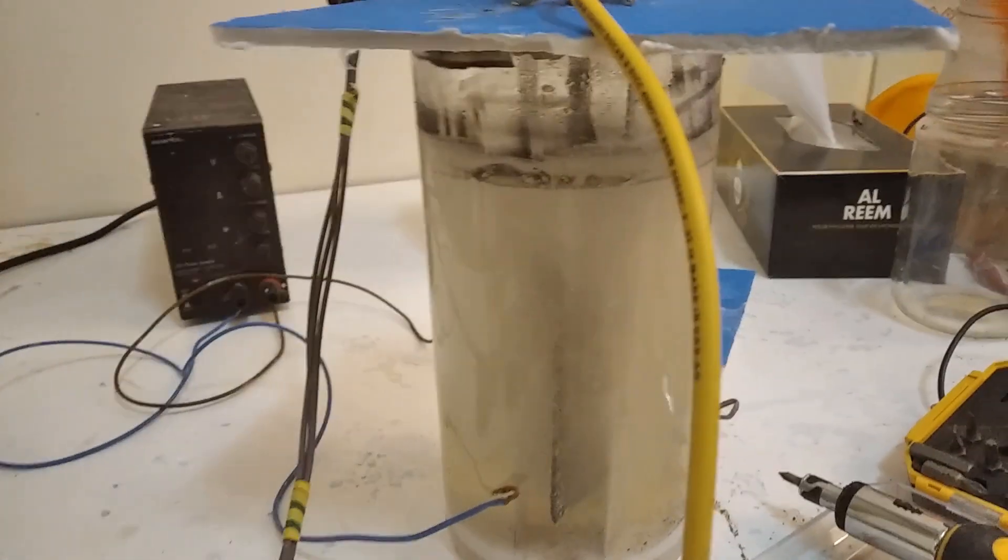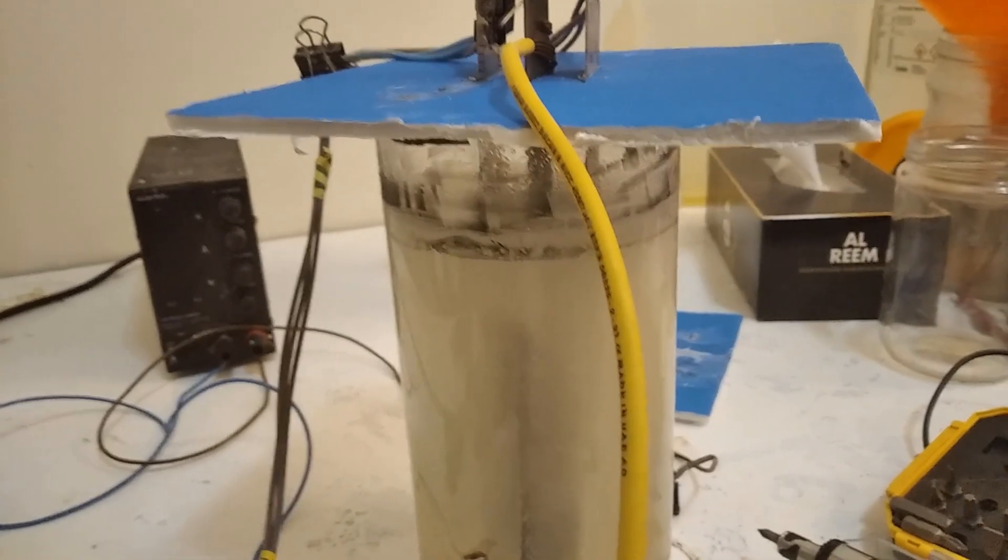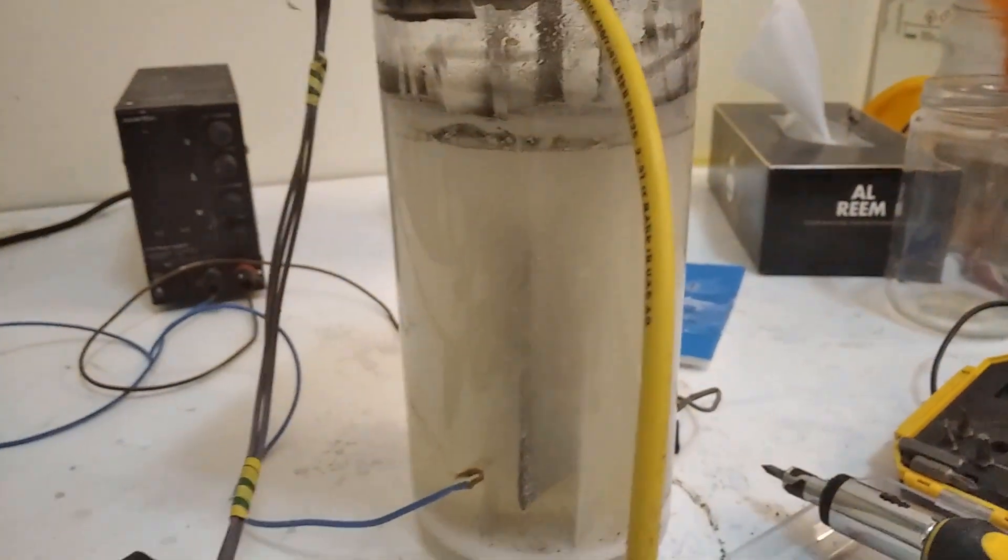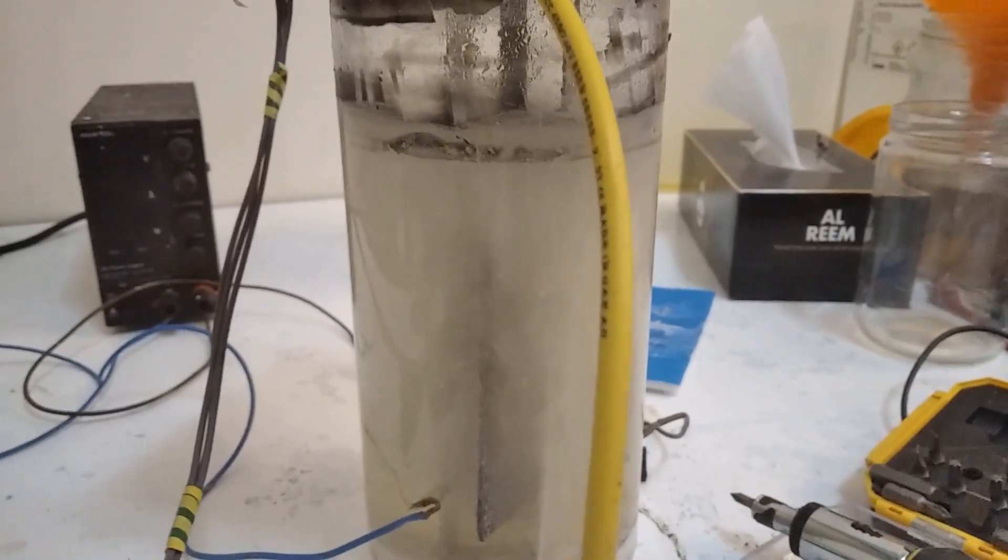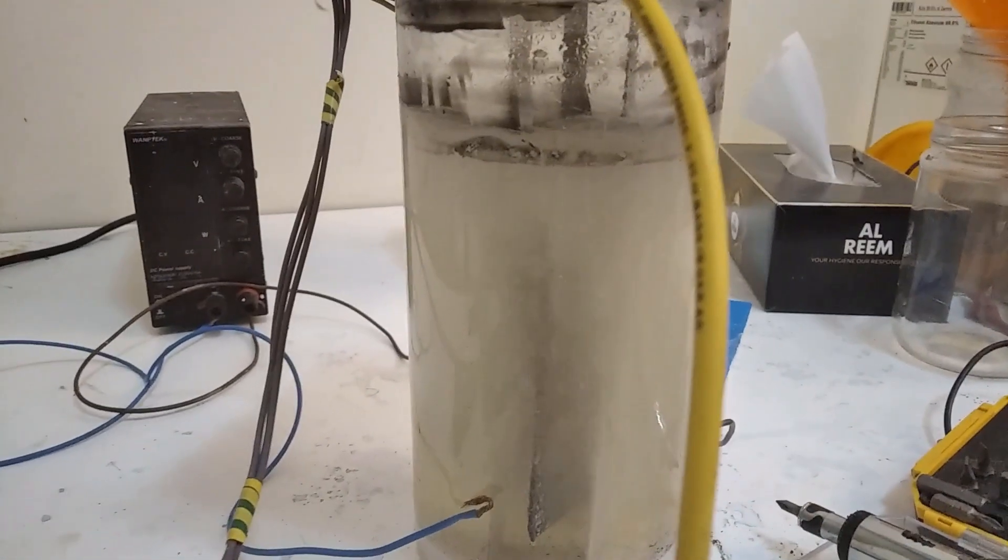I've set the current density correctly and this is a bleach solution. As you can see, unlike the sodium chloride solution where this would immediately turn brown, in this 54% efficient cell using bleach, it's not turning brown, which means that this is making chlorate.